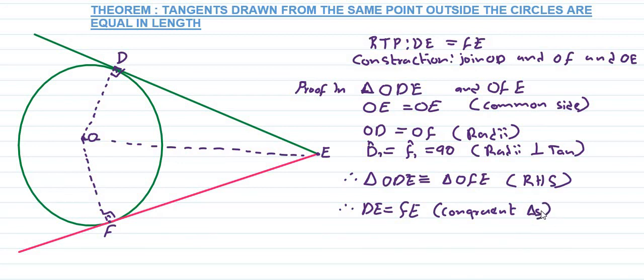From congruent triangles, we have proved that the tangents drawn from the same point outside are equal in length. That was the proof.